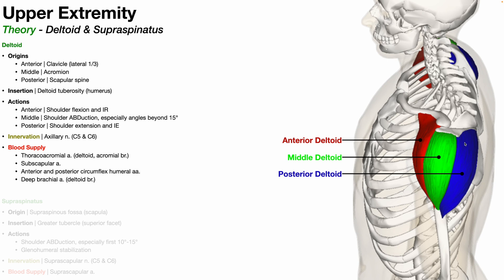In a lot of pictures in textbooks and on the internet, there are clear demarcations between the anterior and middle deltoid and between the middle and posterior deltoid. In real life, there are not these demarcations — it's one continuous muscle. It just so happens that based on where the muscle fibers are relative to the insertion, it tends to promote slightly different actions. These divisions and different colors represent functionally different regions of the deltoid, but structurally you do not see this differentiation on a cadaver or in real life.